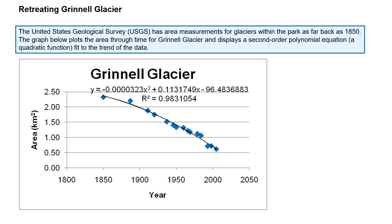If you use this equation and plug in the year, you can predict at what time the area gets to zero for the Grinnell Glacier. This R-squared value tells you how good your best fit line is, and this best fit line is really good. Excel will determine this for you. An R-squared of 0.98 means this curve can be used to explain 98% of the data. If our R-squared were 0.72, it would only explain 72% of the data. This equation can be used with a lot of confidence because it explains 98% of the data.